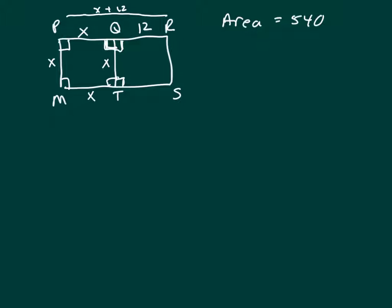The way to find the area of the whole thing, which is 540, is to take the length times the width. So X times X plus 12 gives me 540.